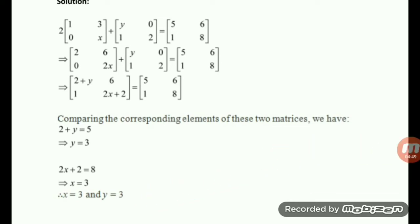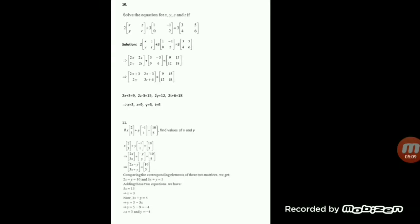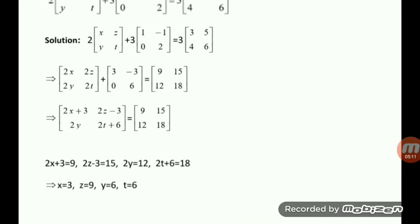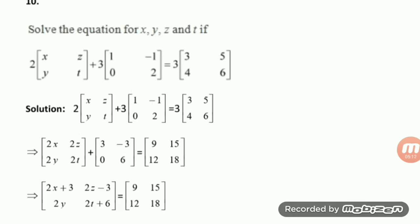You will see the difference between question number 8 and question number 9. In question number 8, your aim is to get the value of the matrix X. But in question number 9, your aim is to get the value of the elements or entries X and Y of the given matrix. Hope you understand the difference.